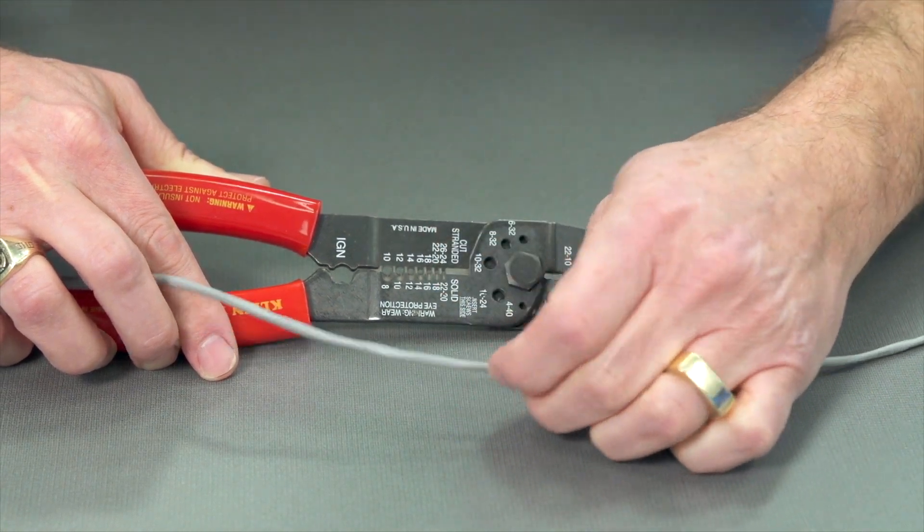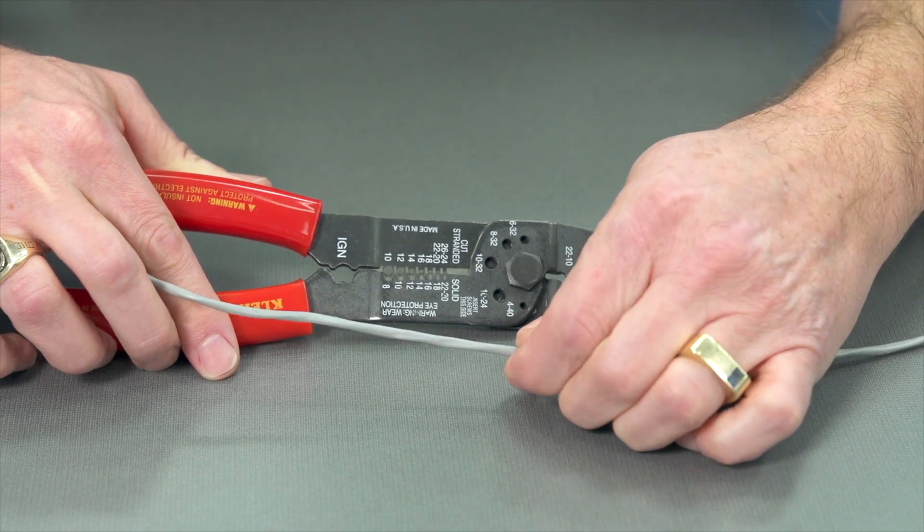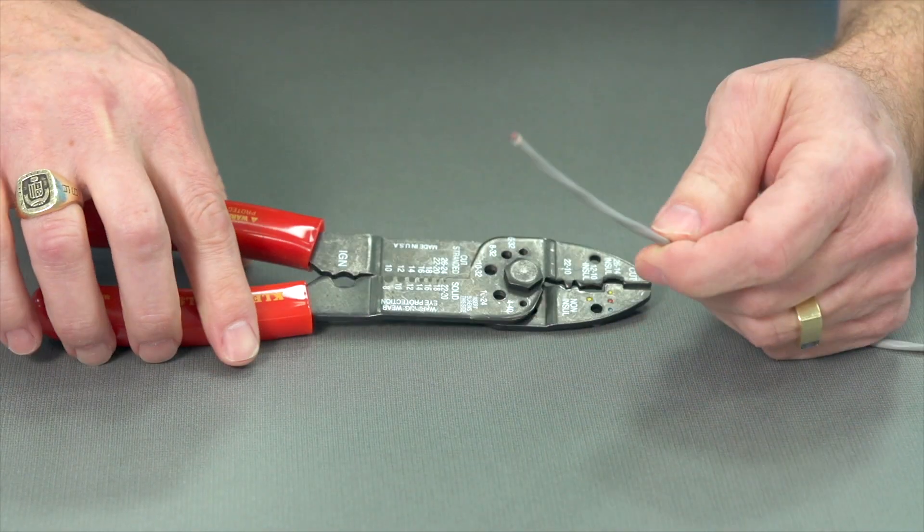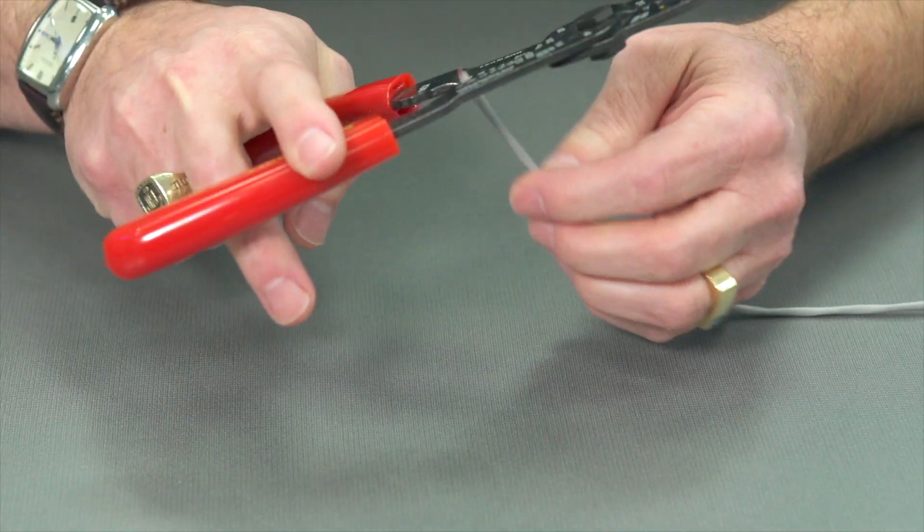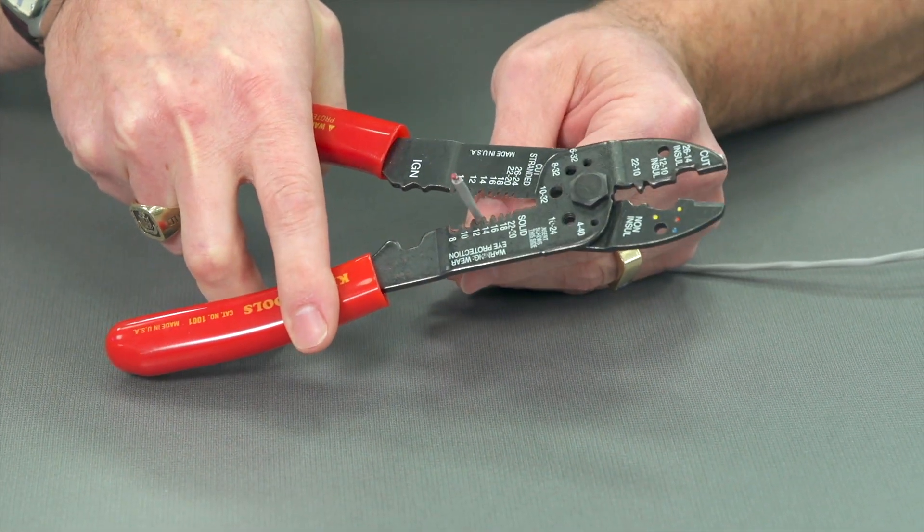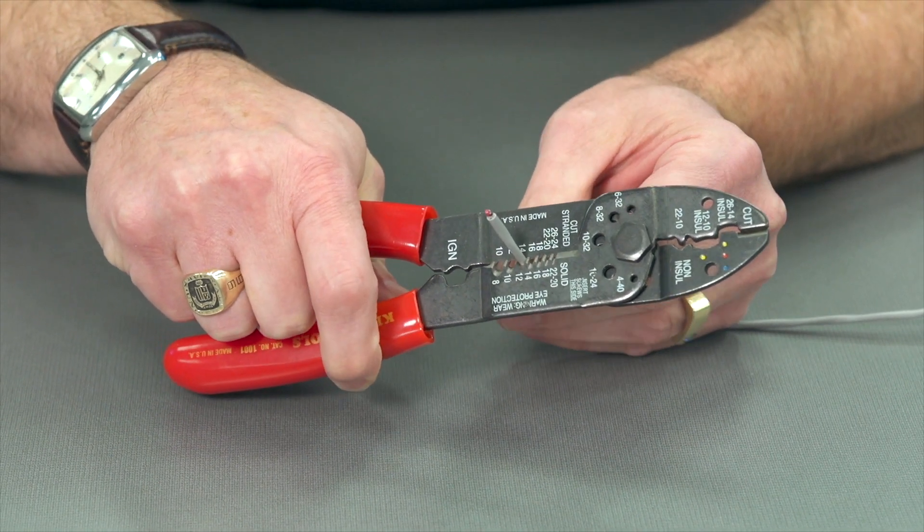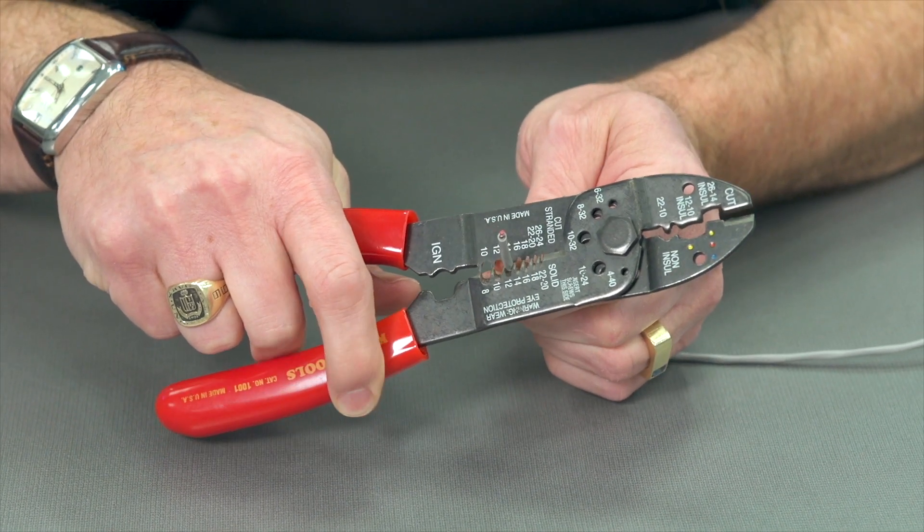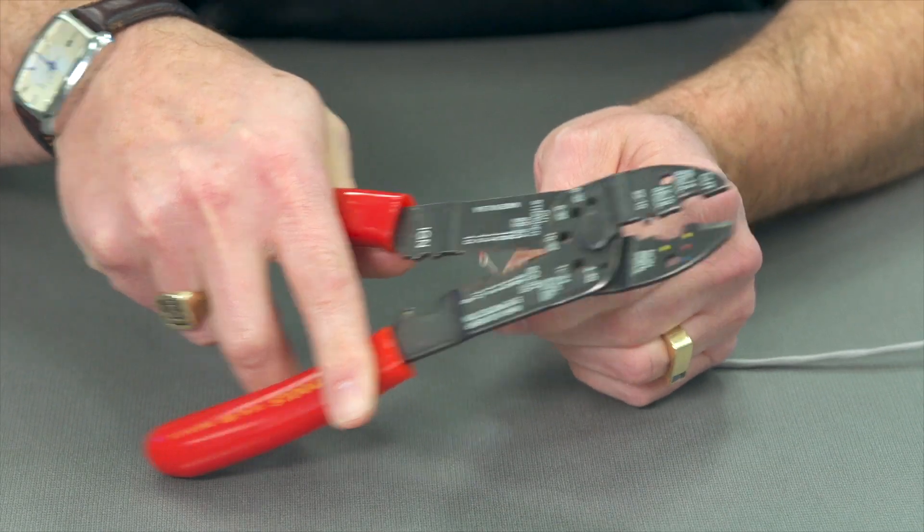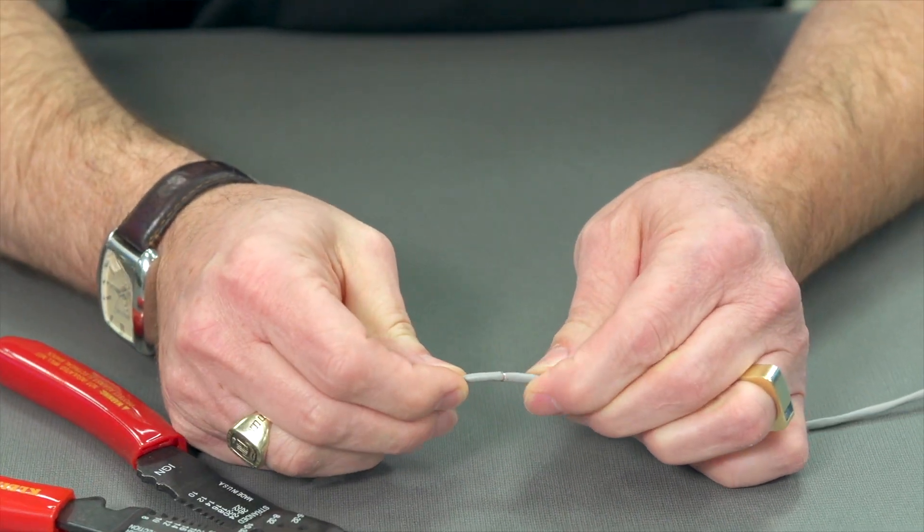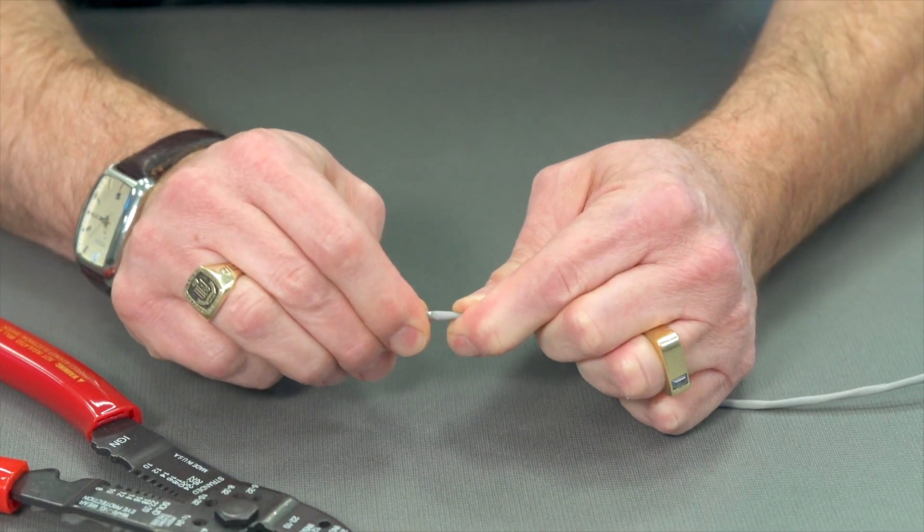But we also need to strip the jacket away, the gray. And so let's try that right off. And we're going to see which one of these slots it fits into. It looks like it's going to be the 14. And we can give it one push through and then another. And that's scored our cable. And we should be able to pull this off.